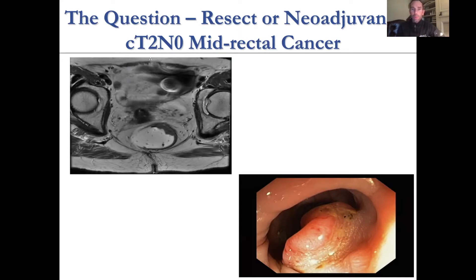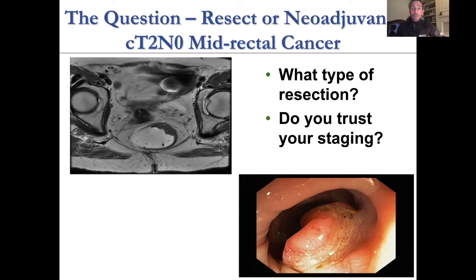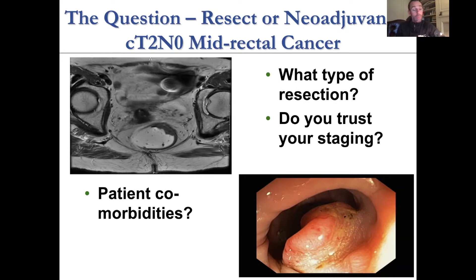Do we give them neoadjuvant radiation therapy or do we resect? You have to first ask yourself what type of resection we're talking about. Is it local excision? Is it a TAMIS? Is it a low anterior resection that's going to take you all the way down? Do you trust your staging? Whether it's MRI or endorectal ultrasound, we have to think about the limitations of the staging system. Patient comorbidities and body habitus come into it — a male with a BMI of 40, or somebody elderly with bad COPD — and what their life expectancy is.